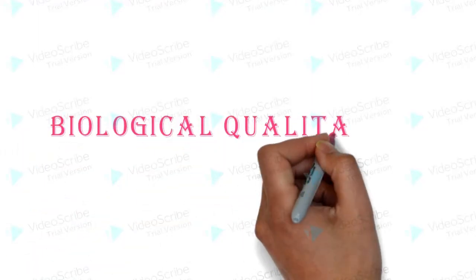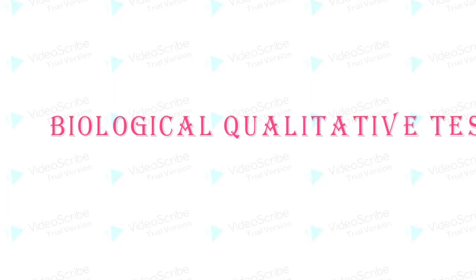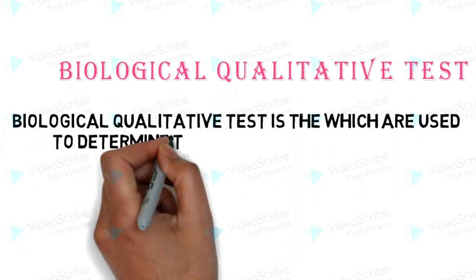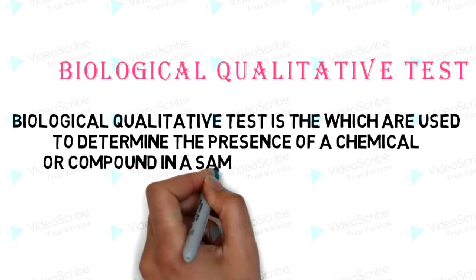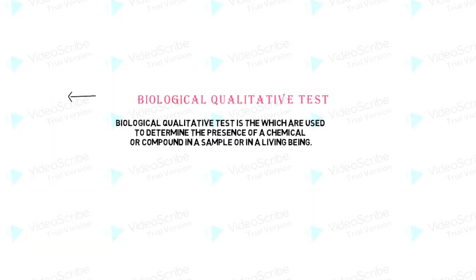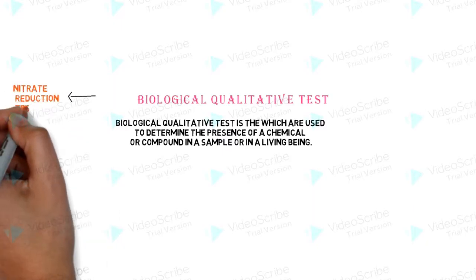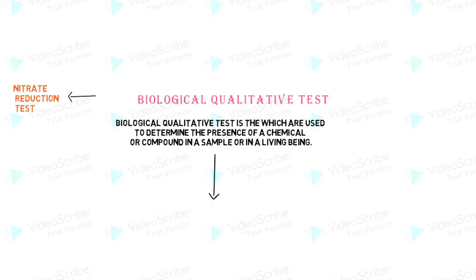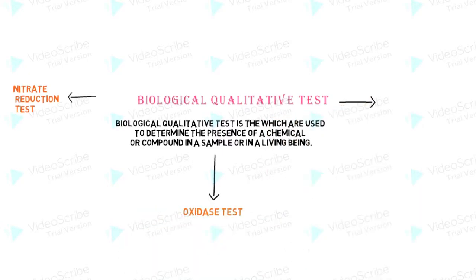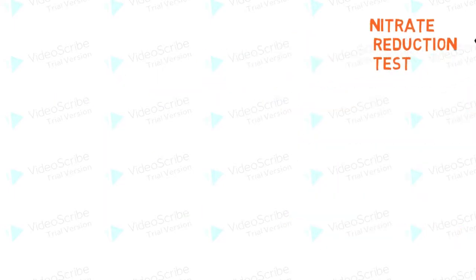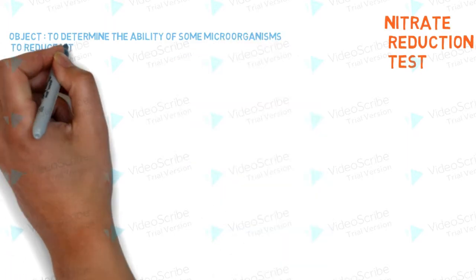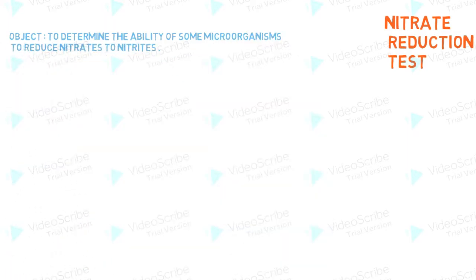Biological qualitative tests are used to determine the presence of a chemical or compound in a sample or in a living being. In this slide, we will discuss three types of biological qualitative tests: the Nitrate Reduction Test, the Oxidase Test, and the Decarboxylase Test.